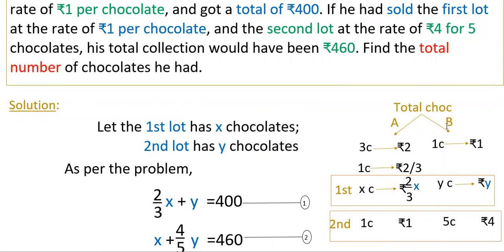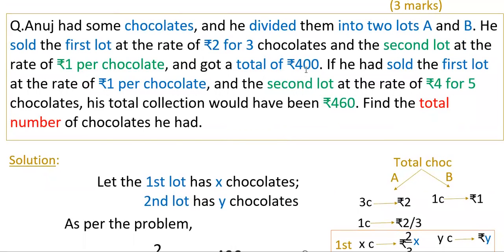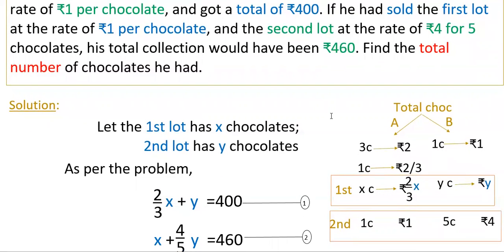So the total price in the second lot is y rupees and in the first lot is (2/3)x rupees. Adding these two gives a total of 400 rupees. So the first equation is: (2/3)x + y = 400.